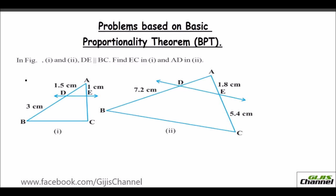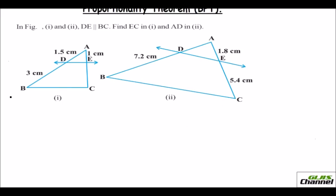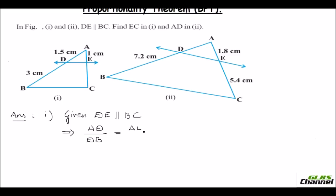The first problem says: in the figure, DE is parallel to BC. In part 1 we need to find EC, and in part 2 we need to find AD. As per the basic proportionality theorem, we know that the sides are proportionate. So AD over DB should be proportionate to AE over EC.